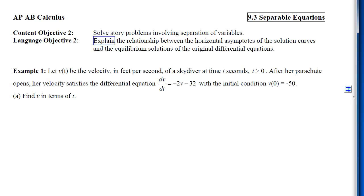Our first example is to let the velocity be the velocity in feet per second of a skydiver at time t seconds, where t is positive. After her parachute opens, her velocity satisfies the differential equation given here, with the initial condition v(0) = -50.